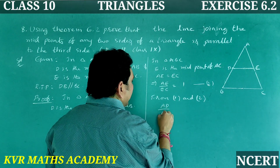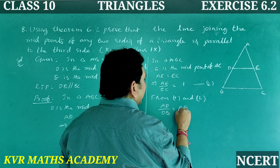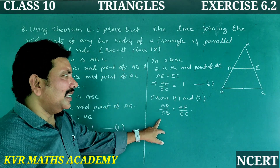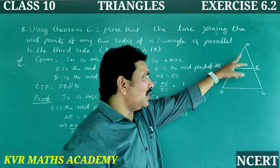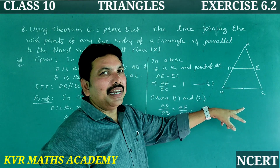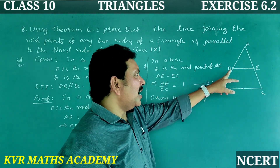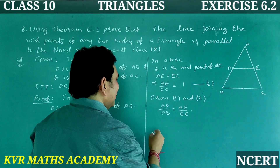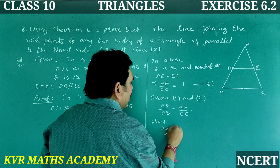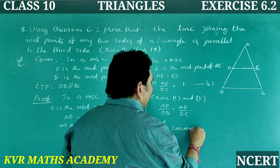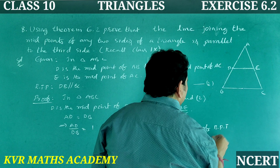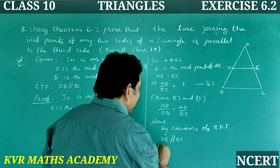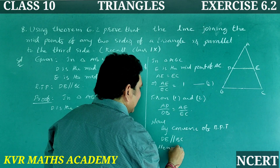From equations (1) and (2), AD divided by DB is equal to AE divided by EC. Since AD divided by DB equals AE divided by EC, by the Converse of the Basic Proportionality Theorem, DE is parallel to BC. Hence proved.